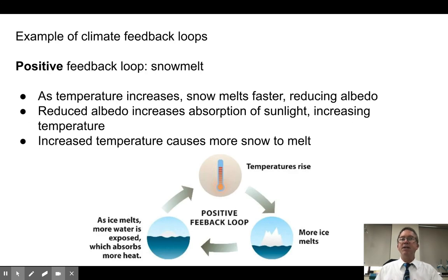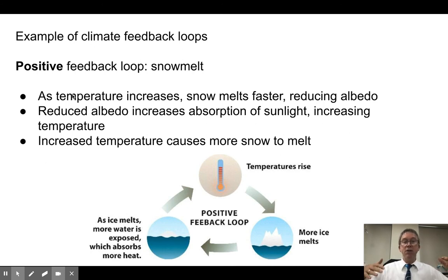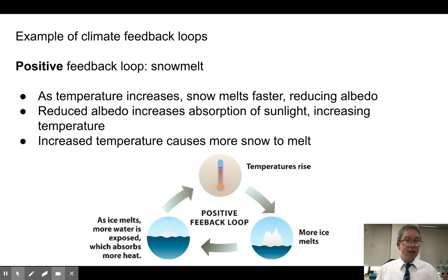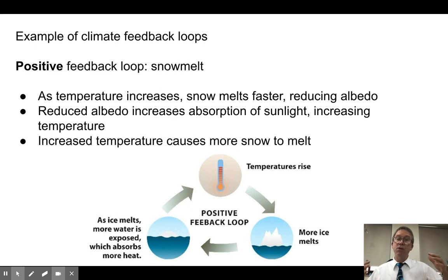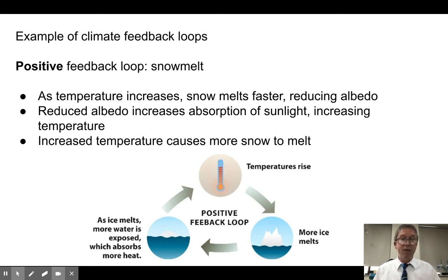Let's look at the snow melt example. As temperature rises due to global warming, snow and sea ice melt, reducing albedo. Less albedo means more energy absorption rather than reflection into space, so temperature goes up further. Higher temperature causes more snow to melt, which reduces albedo even more, causing more absorption, raising temperature even more. This positive feedback loop feeds on itself, causing the condition to become more and more pronounced.